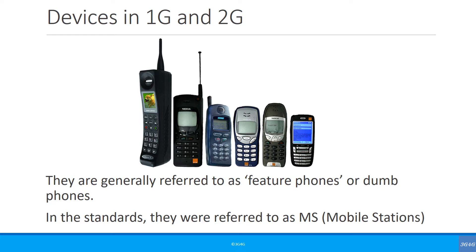Later on, features such as SMS were introduced, but most phones like the brick phone on the left were designed only for voice calls and referred to as dumb phones. With 2G and GSM, feature phones such as the ones on the right were developed.